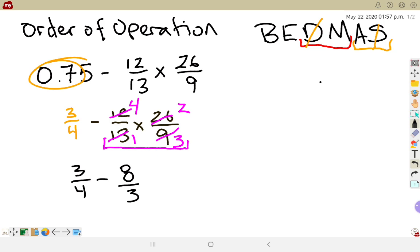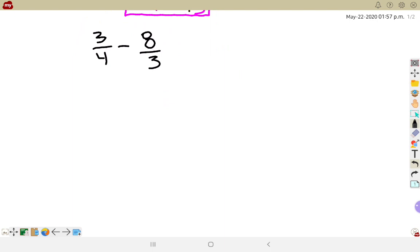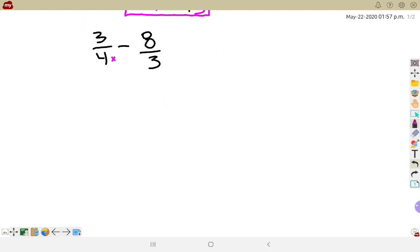So now I've got it as 3 quarters minus 8 thirds. Now I'm not allowed to subtract unless I have a common denominator, so I better get a common denominator for those guys. Common denominator for 4 and 3 would be 12. So I'm going to multiply on the left, top and bottom, by 3.